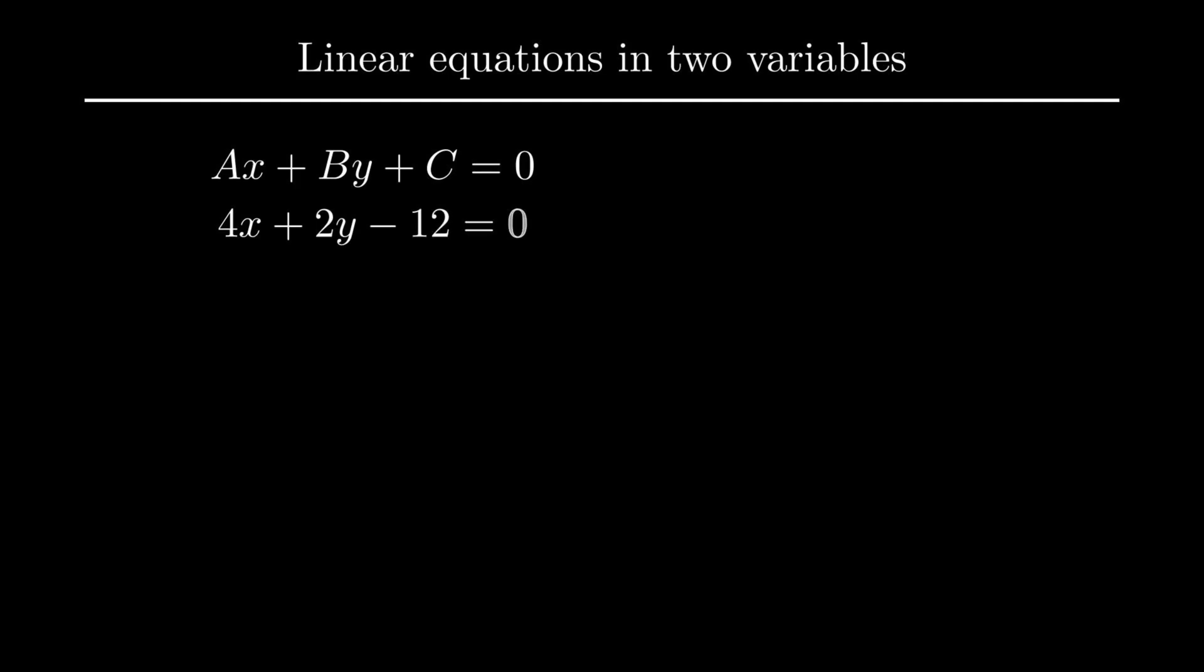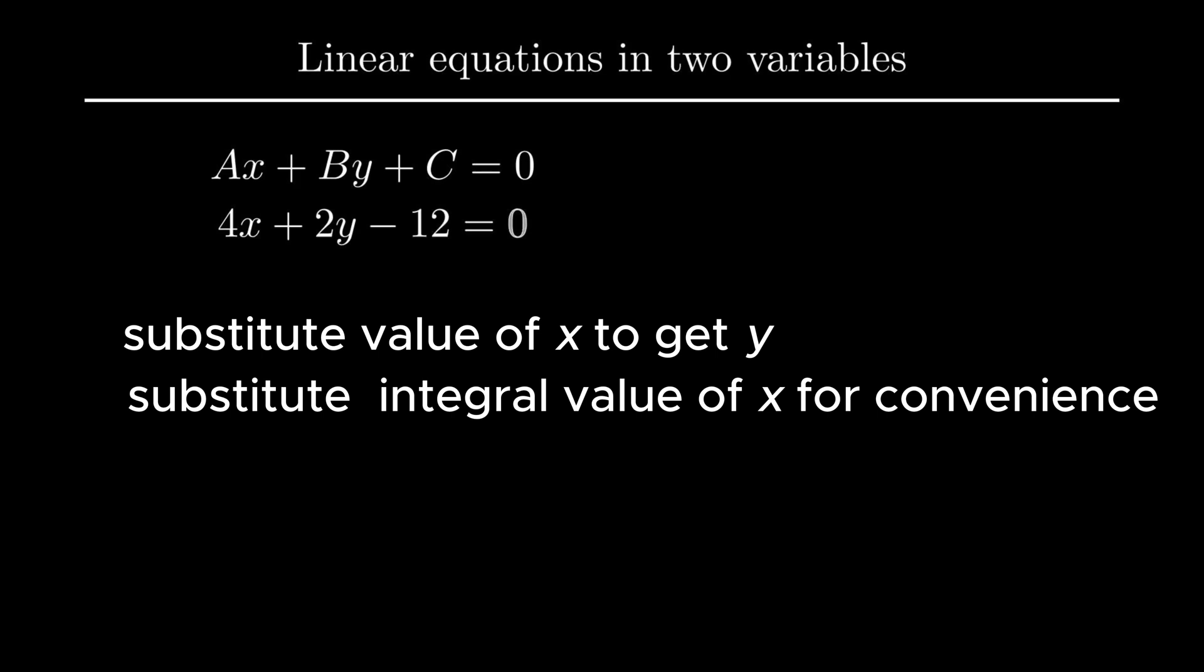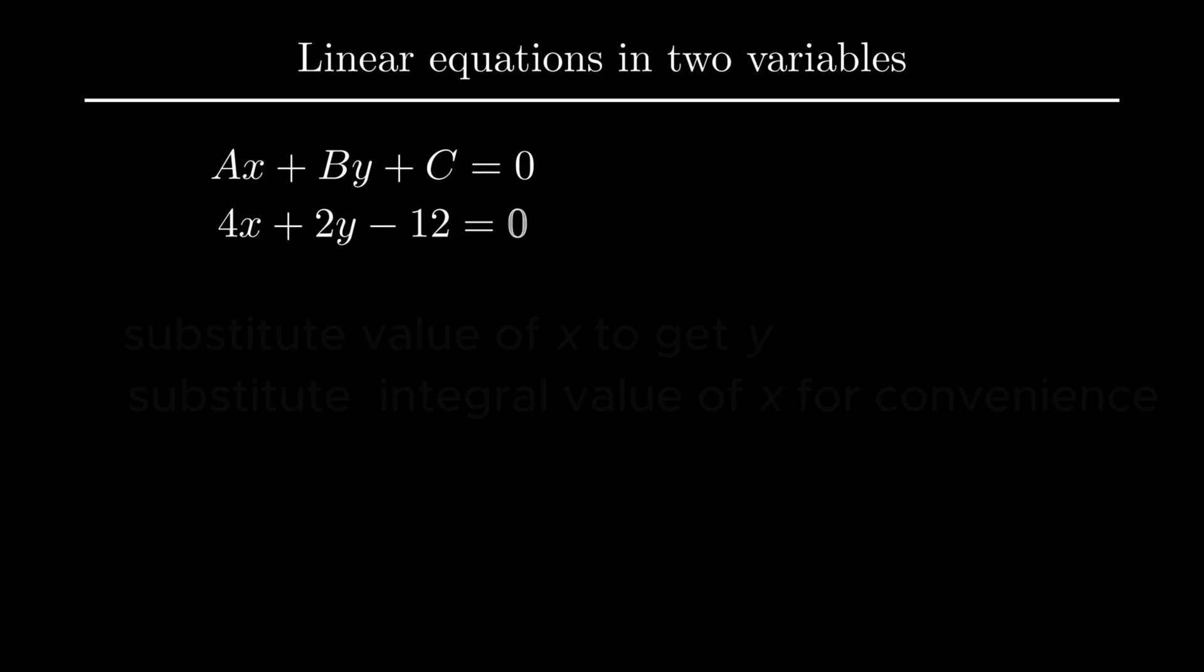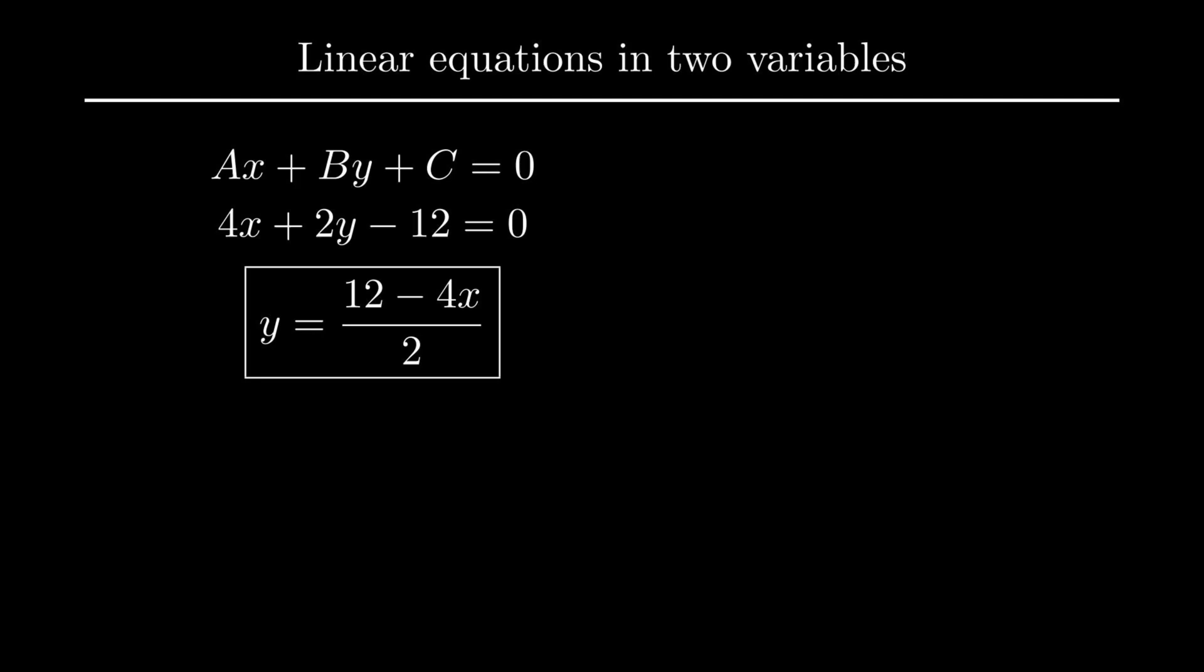In order to solve this equation graphically we need to substitute the value of one variable and calculate the value of the other variable. As variables can take any real values but for the ease of calculation we must prefer integers. On transposing our equation for y variable we get y as 12 minus 4x upon 2.